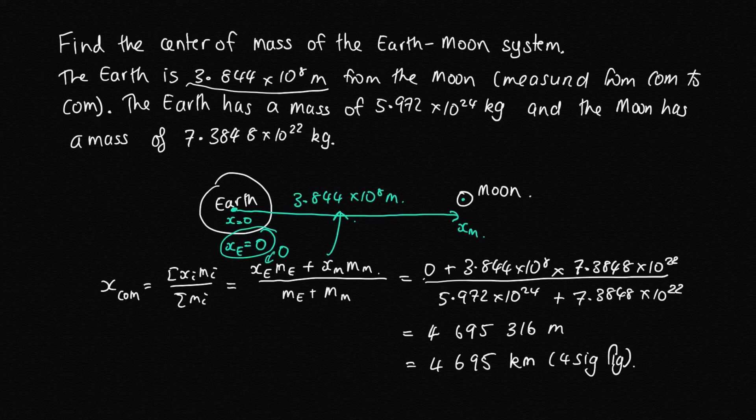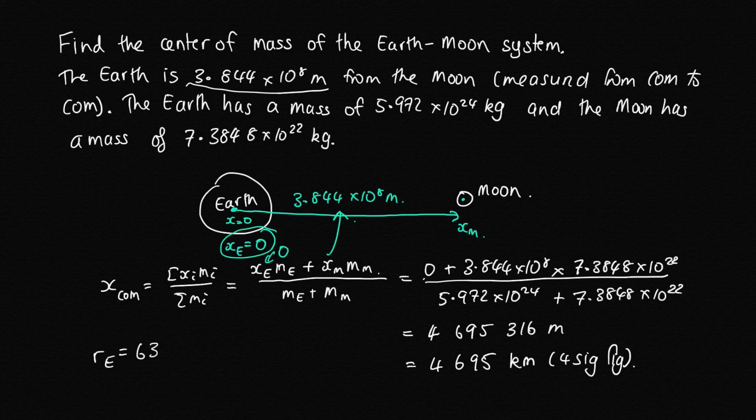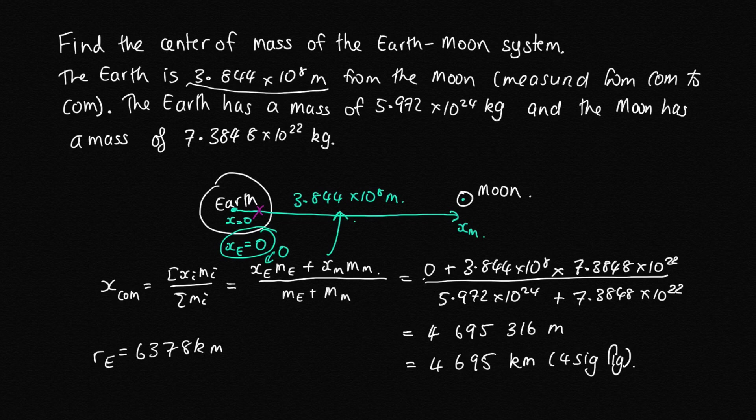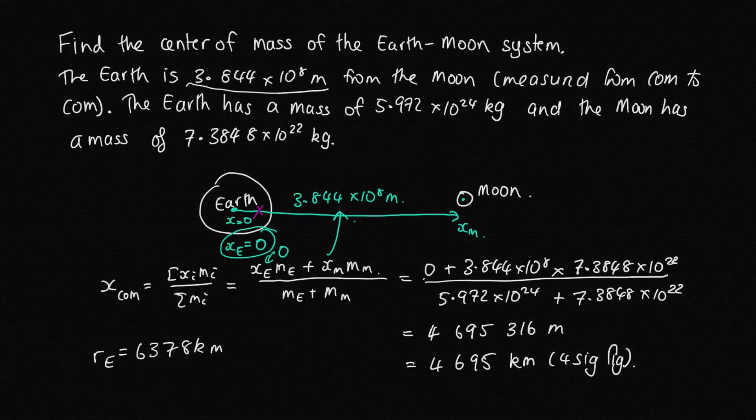Interestingly, the radius of the Earth is equal to 6,378 kilometers. So this center of mass is actually inside the Earth, around about here where I've drawn the purple cross. That's not really surprising because the Moon has so much less mass than the Earth. We'd expect that center of mass to be much closer to the Earth than to the Moon.